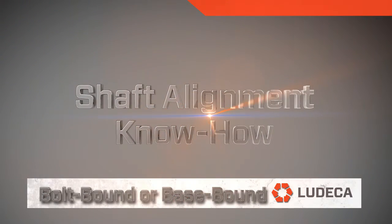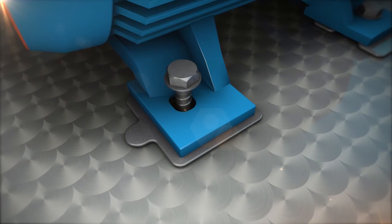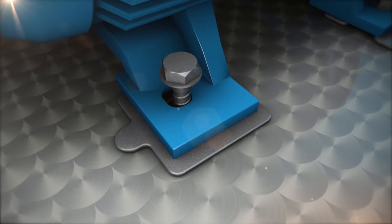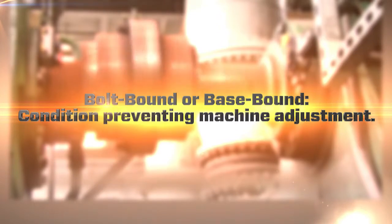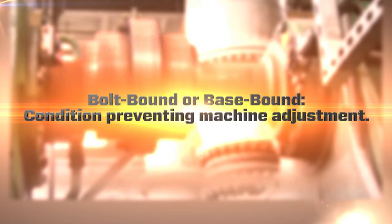Shaft alignment know-how: bolt bound or base bound. A common problem we encounter when doing shaft alignment is to become bolt bound or base bound. This is defined as a condition that prevents a machine adjustment from being accomplished because of insufficient clearance.